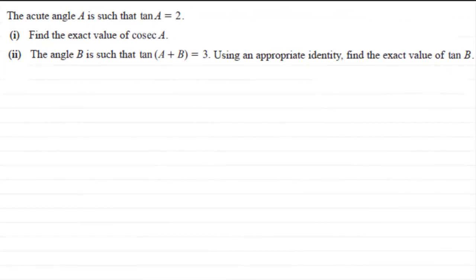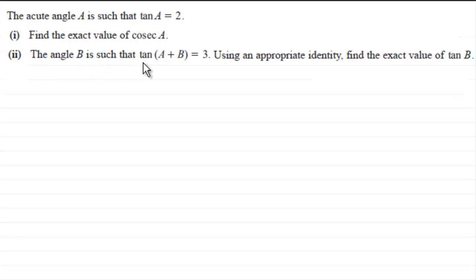In this example, we're given that the acute angle A is such that tan A equals 2, and we've got to find the exact value of cosec A. In the second part, the angle B is such that tan of A plus B equals 3, and using an appropriate identity, find the exact value of tan B.